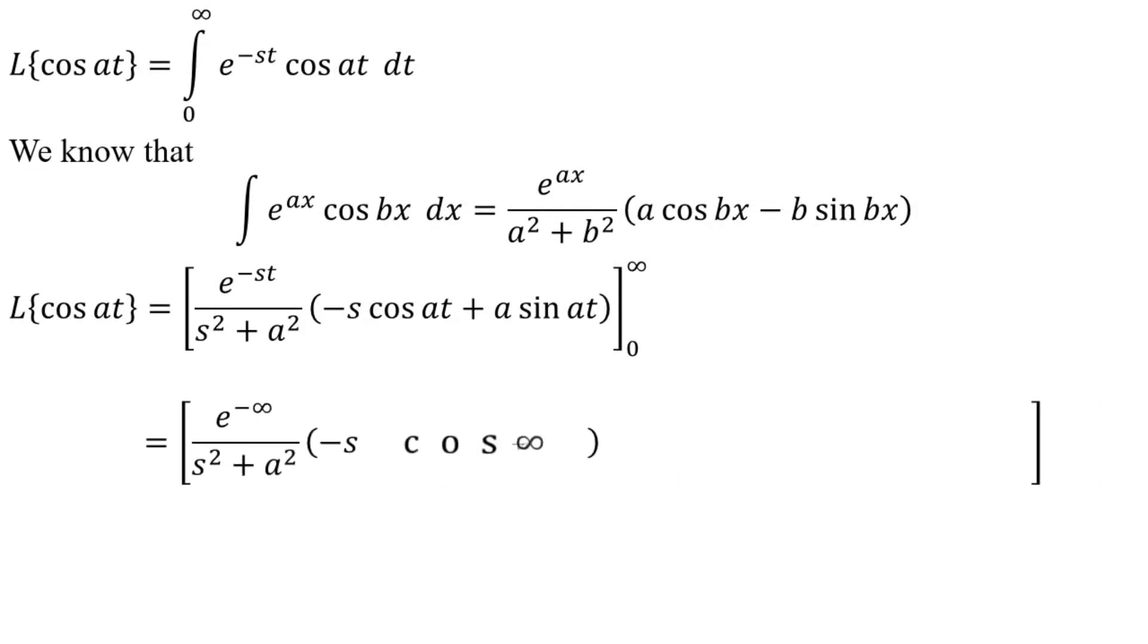Substituting upper limit minus lower limit. e to the power minus infinity is equal to 0, e to the power minus 0 is equal to 1, sin 0 is equal to 0, cos 0 is equal to 1.